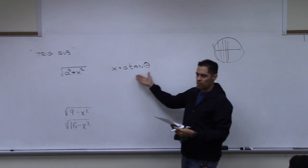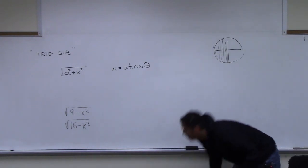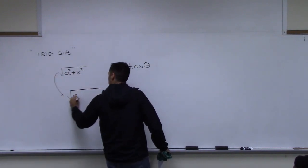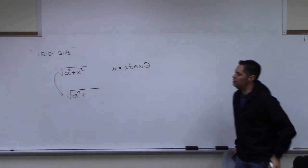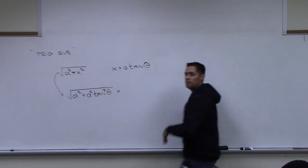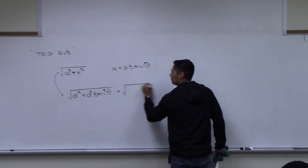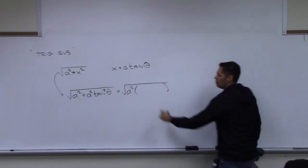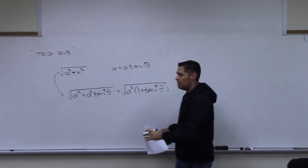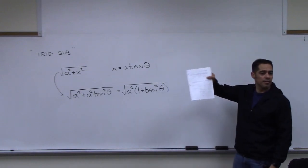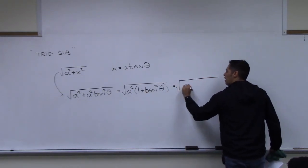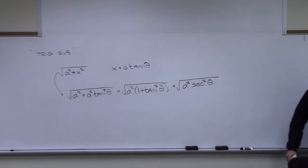For the a squared plus x squared case with x = a tan theta: substituting gives √(a² + a² tan²θ). Factor out a², leaving √(a²(1 + tan²θ)). Since 1 + tan²θ = sec²θ, this becomes √(a² sec²θ), and after taking the square root with domain restrictions giving a positive secant, we get A secant theta.